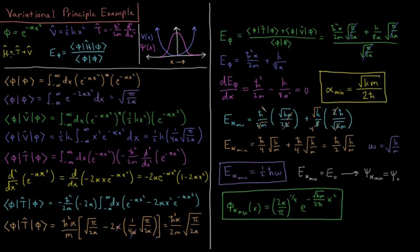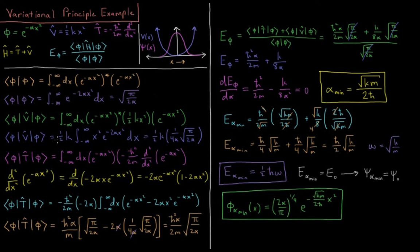Next we need the two components of the Hamiltonian: the expectation value of kinetic energy and the expectation value of potential energy. For the potential energy, we have the integral from minus infinity to infinity of e to the minus alpha x squared times the potential energy operator one half kx squared times e to the minus alpha x squared. Factoring out one half k and combining the exponentials, we integrate x squared times e to the minus 2 alpha x squared dx. Looking that up in a table gives one half k times one over 4 alpha, times the square root of pi over 2 alpha.